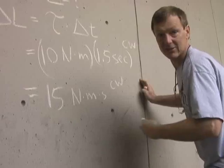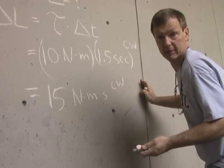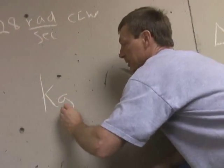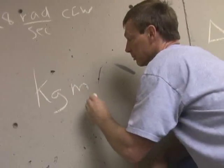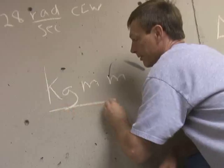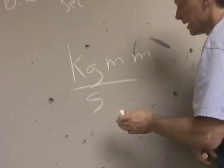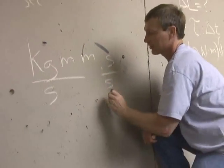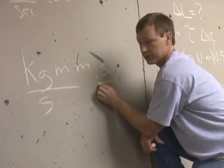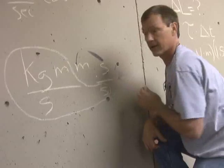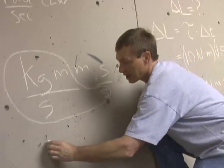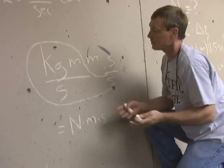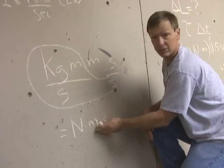Now, a newton meter second is the same as kilogram meter squared per second. I can show you that real quick. Take kilogram meters squared per second, break out the meters per second. I want to make a newton out of that, so I'll multiply top and bottom by seconds. A newton is a kilogram meter per second squared — right there — and I've left a meter and a second on top. So that equals a newton meter second. Kilogram meter squared per second and newton meter second are the same thing.